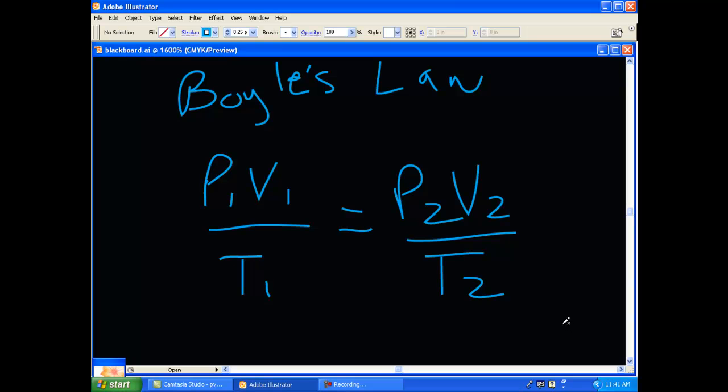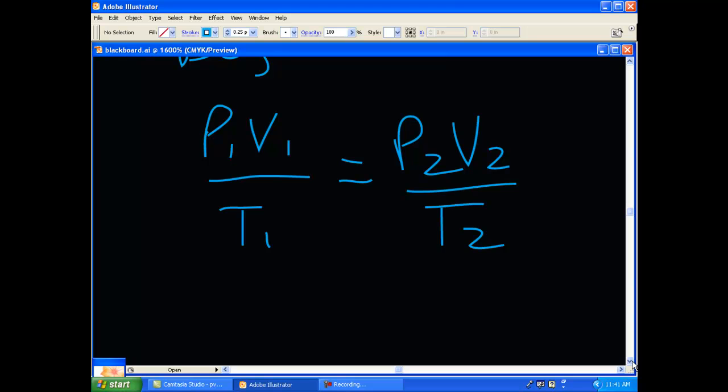P1 V1 over T1 equals P2 V2 over T2. And that's breaking down the Ideal Gas Law.